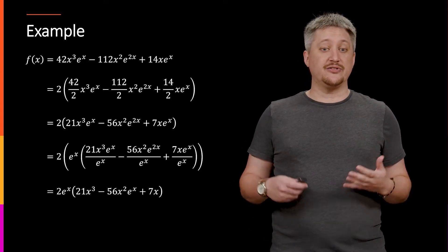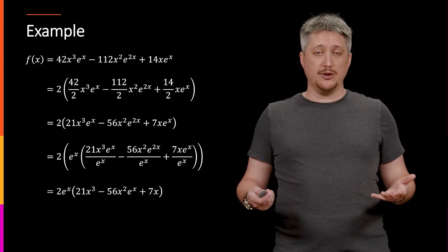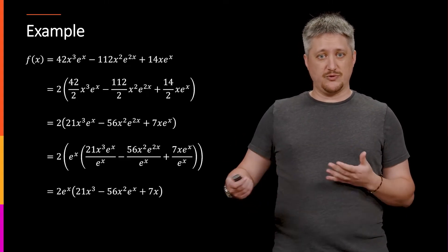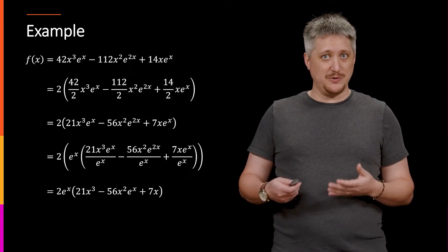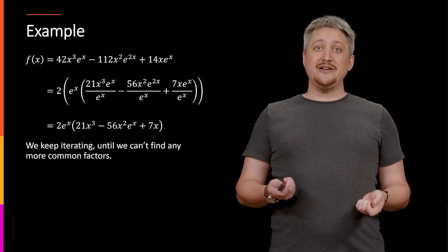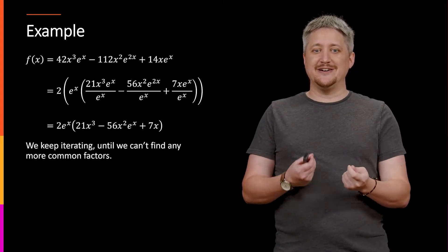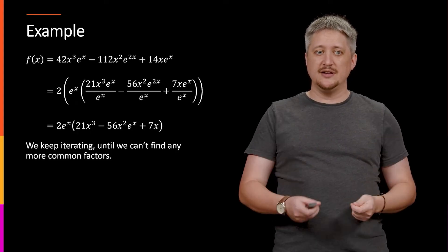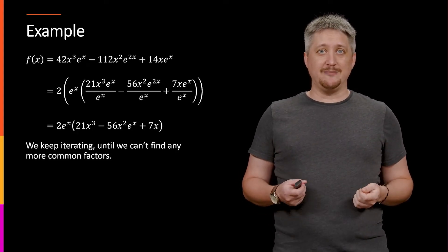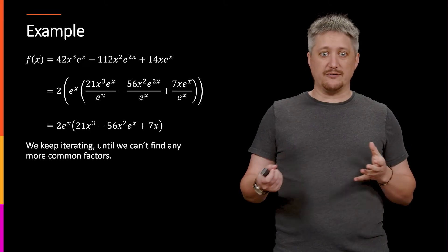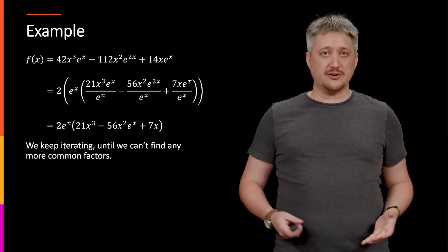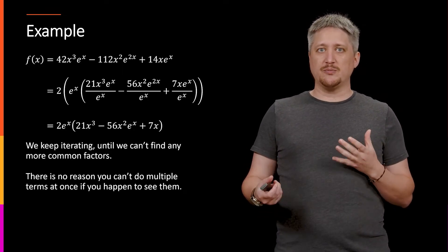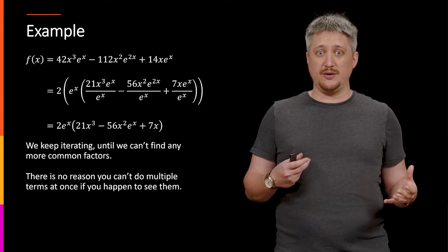Again you might look at this and notice there's still stuff you can pull out, but that doesn't mean that we've messed up, it just means that we have another step to do, we have more to do. Now to be clear I'm doing this very piecemeal, doing every single little piece to show the process, and we can keep iterating this one step at a time, pulling out one number or whatever at a time until we don't find any more common factors. And that's how we know that we're done. But there's no reason you can't do multiple terms at once if you're comfortable or you happen to see more than one term at once.